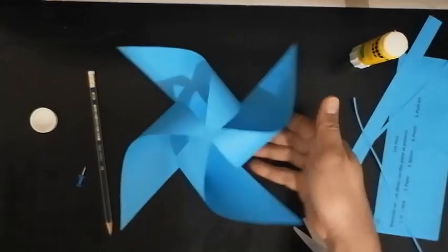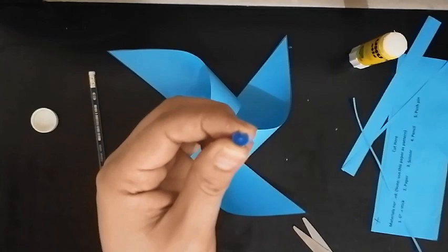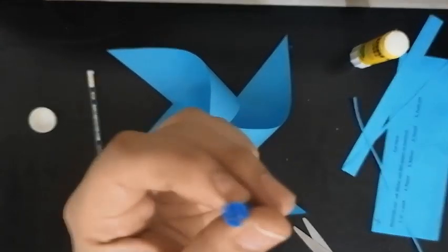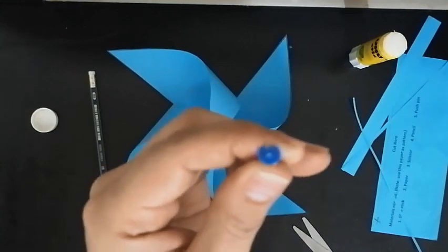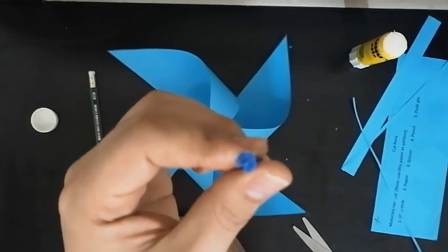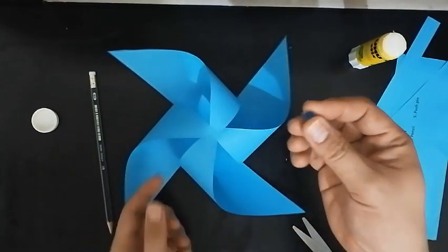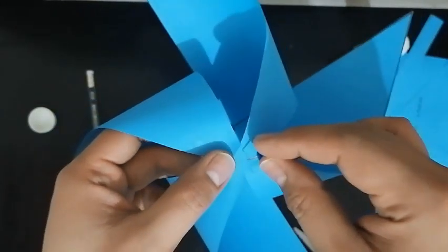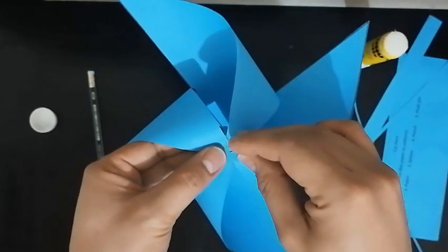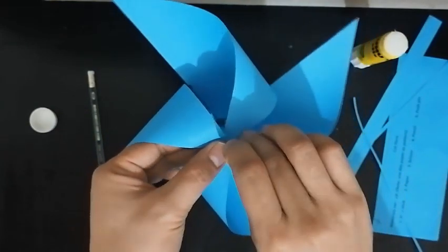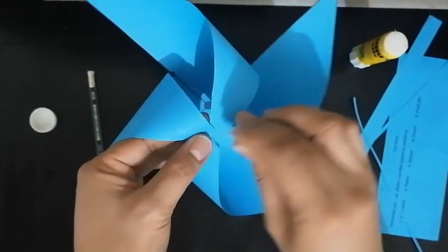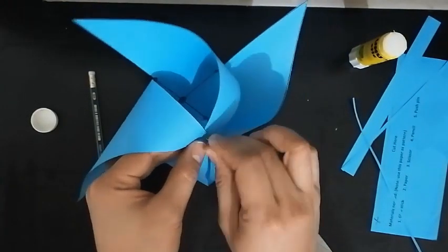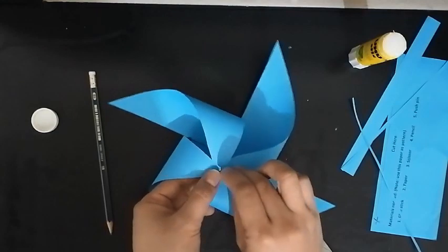Now grab your pushpin. If you can't, or you're scared with a sharp edge, try to ask the help of your mom and dad at home to help you punch through at the middle of the wheel. Make a hole carefully. Make sure that you will not punch through your finger or hurt your finger. Slowly will do.